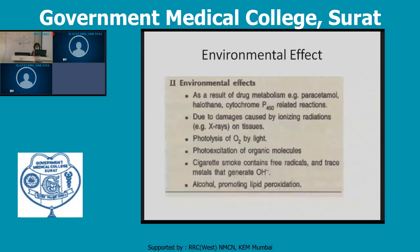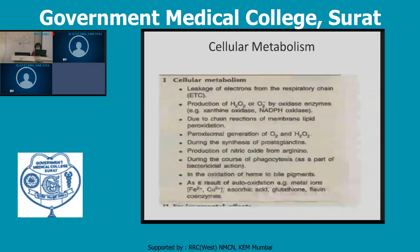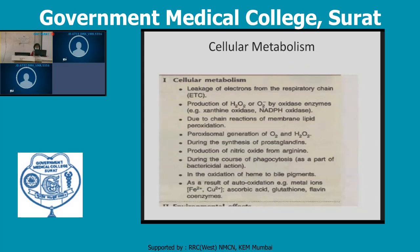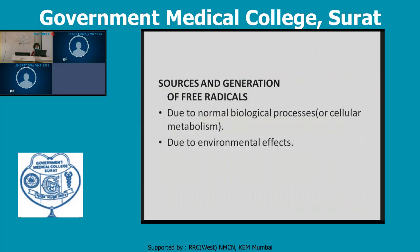Now, environmental effects as sources of free radicals include drug metabolism — examples are paracetamol, halothane, and cytochrome P450 — damage caused by ionizing radiations such as X-rays, photolysis of oxygen by light, photoexcitation of organic molecules, cigarette smoke that generates free radicals, and alcohol promoting lipid peroxidation. So there are two phases: sources by cellular metabolism and by environmental effects.